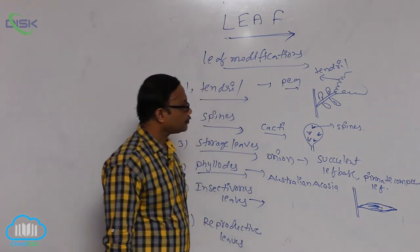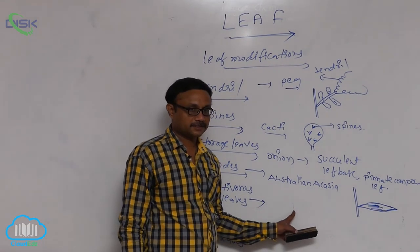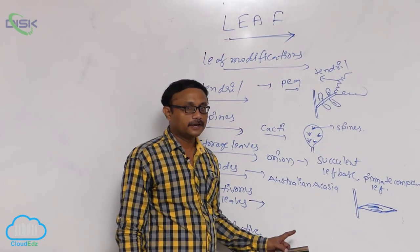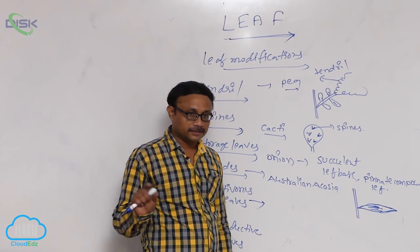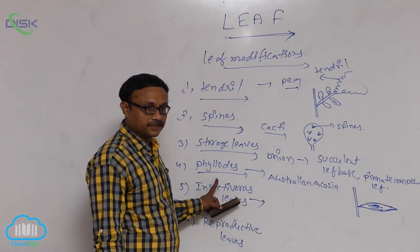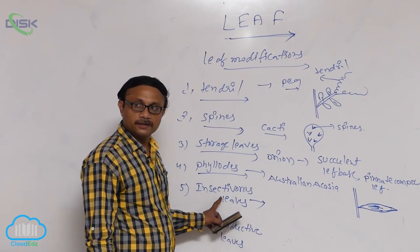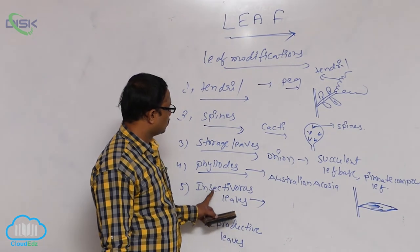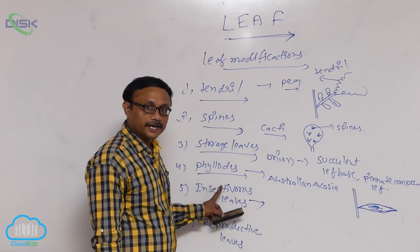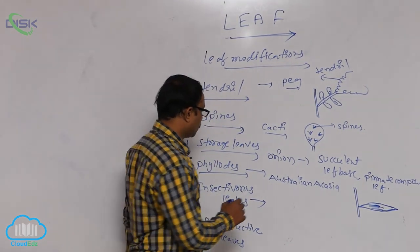Insectivorous plants. In some plants, leaves trap insects for absorbing nitrogenous material. For example, Nepenthes plant is grown in nitrogen-deficient soil — in some forest regions where nitrogen is very less inside the soil. For absorbing nitrogenous substances, in Nepenthes, leaves are converted into a trap-like structure to catch insects for requirement of nitrogenous substances. These are known as insectivorous leaves. Example: Nepenthes.